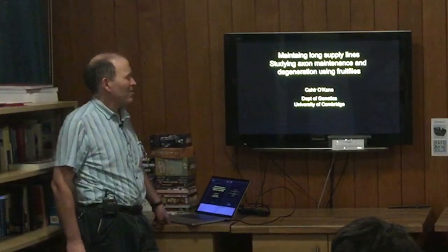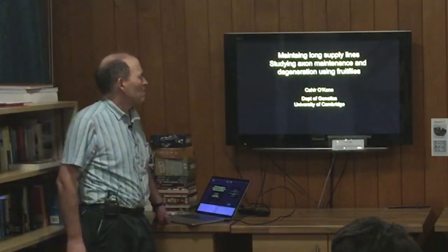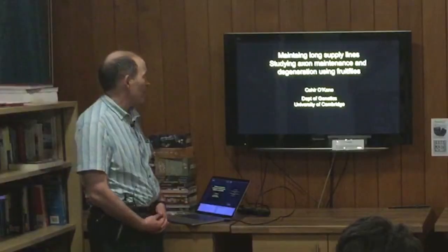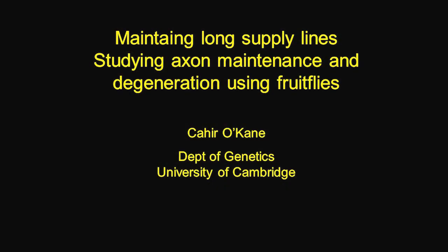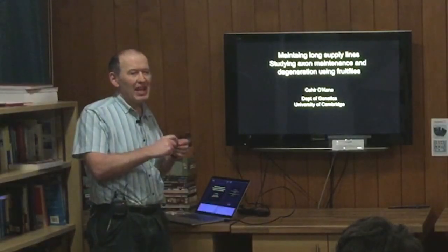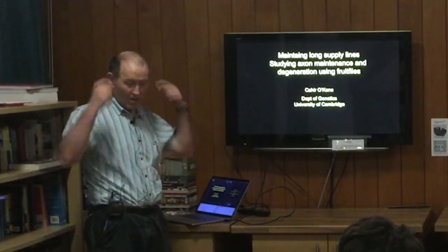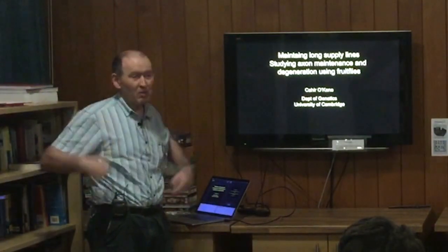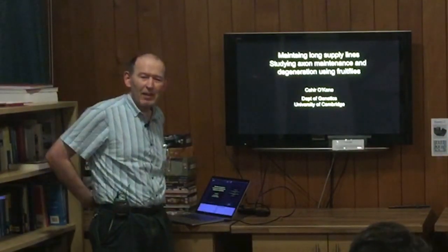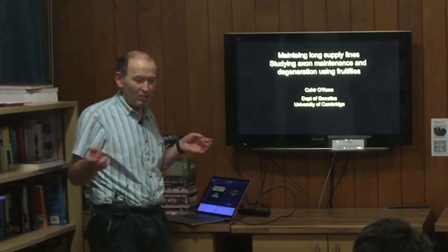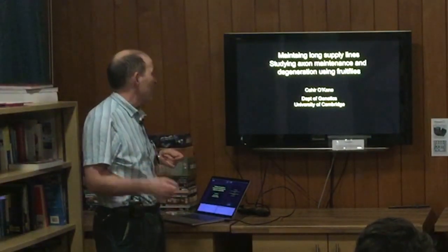So, maintaining long supply lines — I'll come on after a couple of slides to why I've called the talk like that. But axons are the long parts of our neurons that transmit signals from one end of the nerve cell to the other. In humans, they can be as long as from the brain to the bottom of the spinal cord, or from the spinal cord to our muscles. That's why it's called maintaining long supply lines.